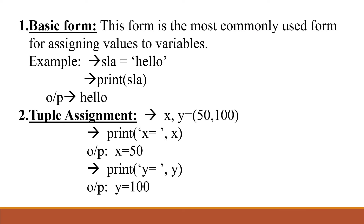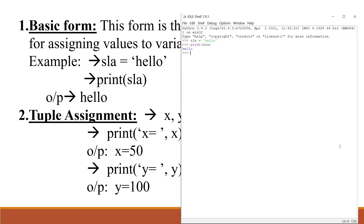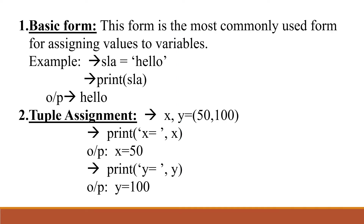Next, tuple assignment. In this form, by using the tuple data type we assign values to variables. For example, if we take x, y = (50, 100), then print x gives the output as 50, and print y gives the output as 100.